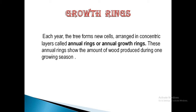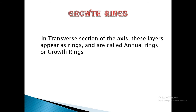This annual ring shows the amount of wood produced during one growing season. In the transverse section of the axis, these layers appear as a ring. If we take the transverse section of any axis, we see a ring-like structure, and that ring-like structure is the annual ring or growth ring.